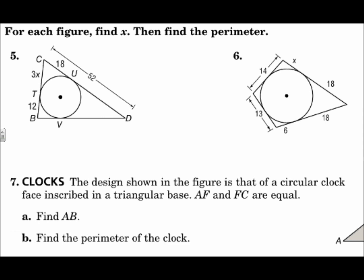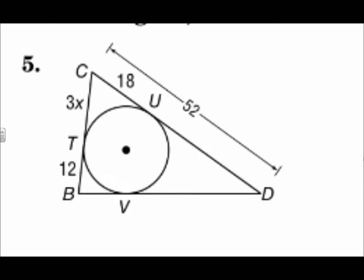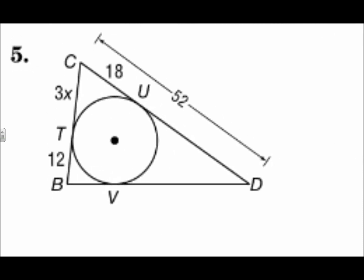For each figure, find x, then find the perimeter. On question 5, I have three places here where there are tangents intersecting at an outside point. Segment U, D, and segment D, V have to be the same. Segment C, U, and segment C, T have to be the same. And segment B, T, and segment B, V have to be the same.